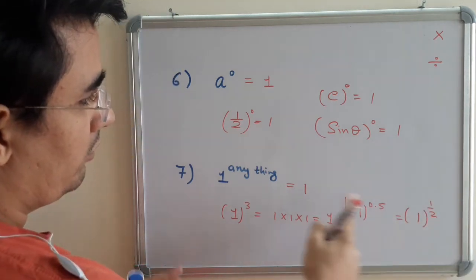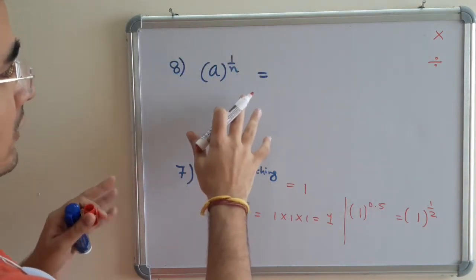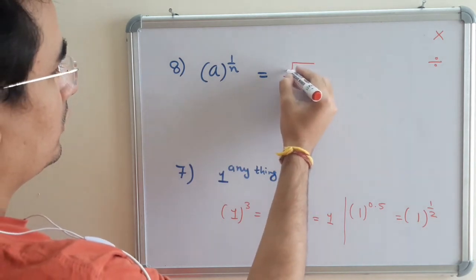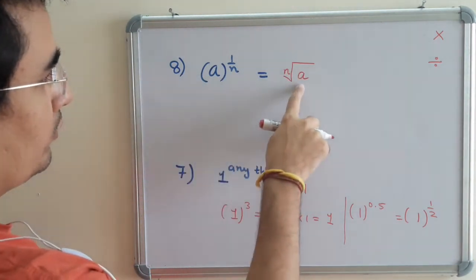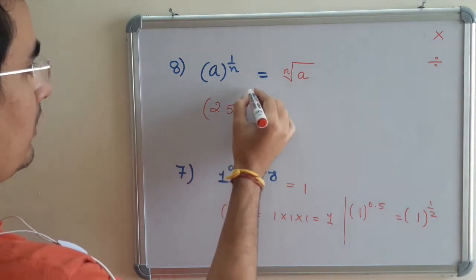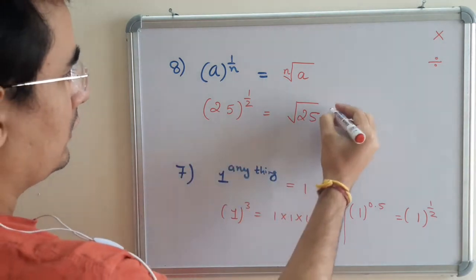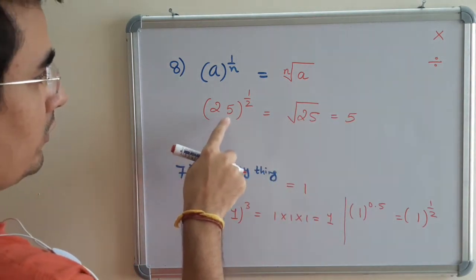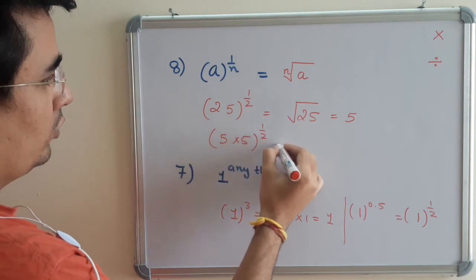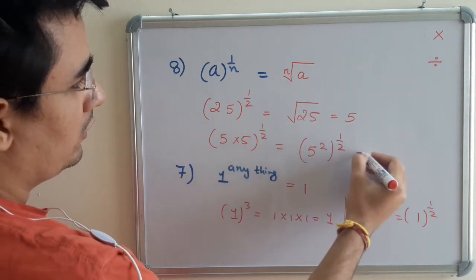Our next law is a raised to the power 1/n. That means if a number has a power as a fraction, what happens is it becomes root n of a. Let me give you an example. Suppose it is 25 raised to the power 1/2. It means square root of 25. We know the answer is 5, but how do we get to know from here? So 25 can be written as 5 times 5, power 1/2. So we got 5^2, 1 upon 2.